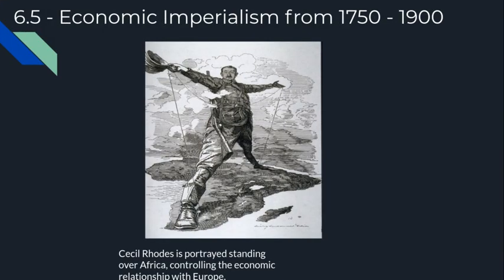Another example of economic imperialism from 1750 to 1900: Cecil Rhodes is portrayed standing over Africa, controlling the economic relationship with Europe. Cecil Rhodes, a British imperialist, created the De Beers company that dominated the world diamond market. They started with multiple mining companies established throughout South Africa. This monopoly was sealed in 1890 through a partnership with the Diamond Syndicate in London. During the making of this company, Rhodes was able to establish another British colony in South Africa — Rhodesia.